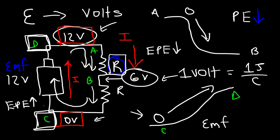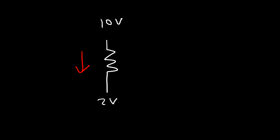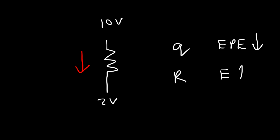So an EMF is a voltage generated by a source like a battery, solar cell, thermocouple, or generator, and the EMF causes current to flow from low potential to high potential, doing work on the charges and increasing their electric potential energy. Whenever current flows from a high voltage to a low voltage, the charges are losing electric potential energy. The resistor absorbs that energy — it heats up, converting electric energy into heat.